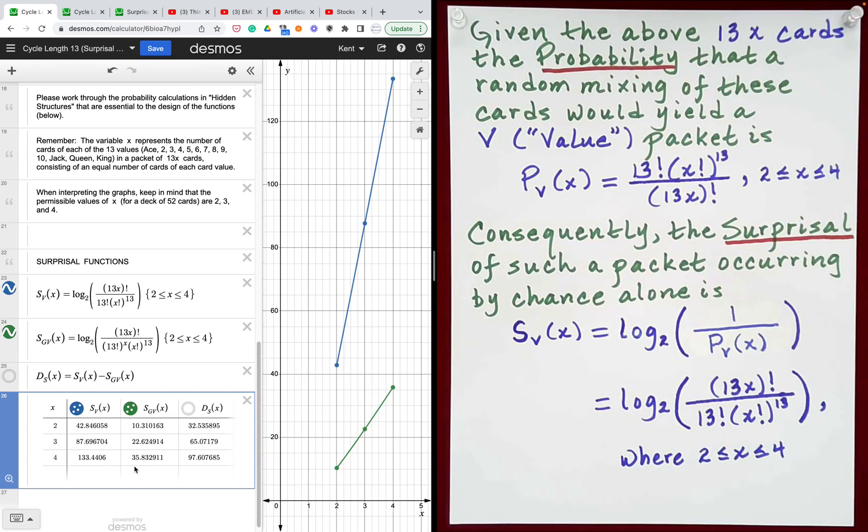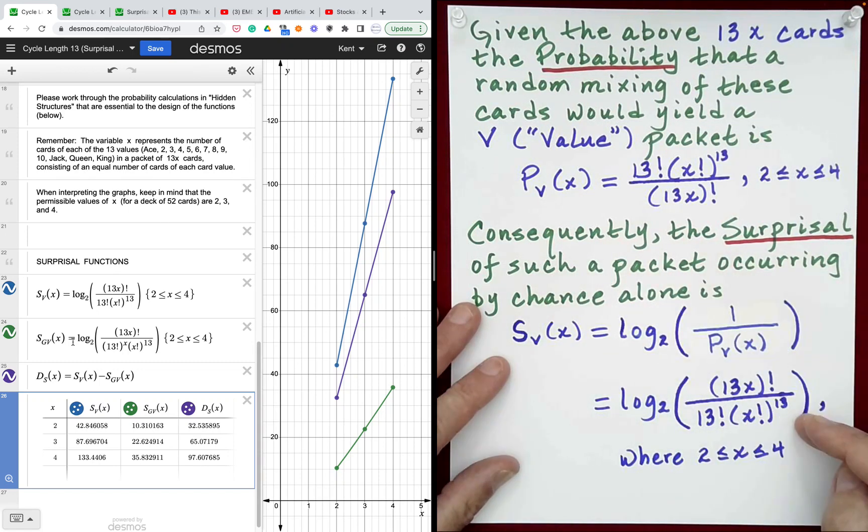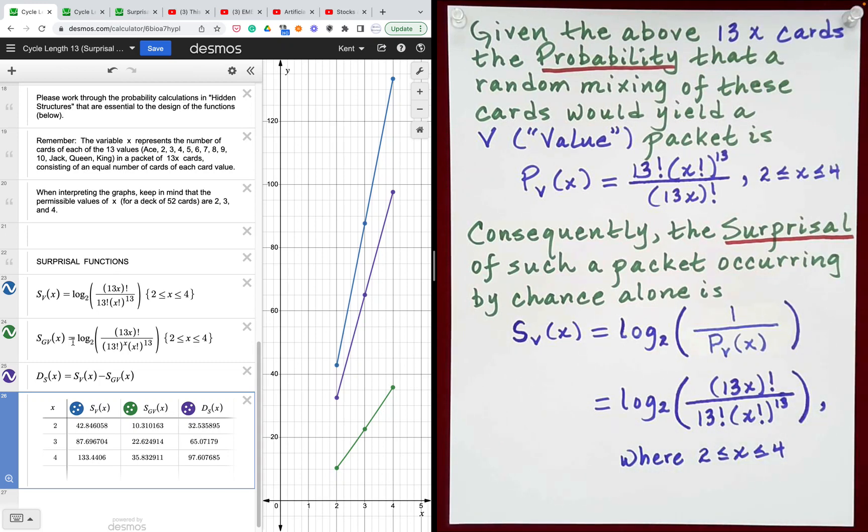And of course, I also have this difference function which simply shows the difference in surprisal between the original cyclic packet having cycle length 13 and the Gilbreth shuffled packet. So thank you for watching and watch for the next video in this series where we will come up with a general formula in which you can choose any cycle length you like for a Gilbreth performance based on that packet structure. Thank you for watching and take a look at other videos on the Hidden Structures channel and also take a look at the Desmos activity link provided in the description below.